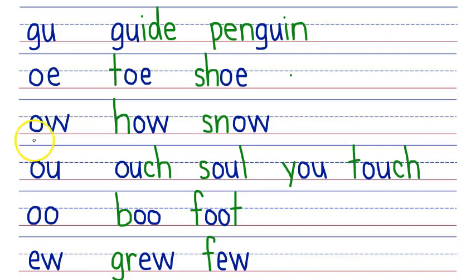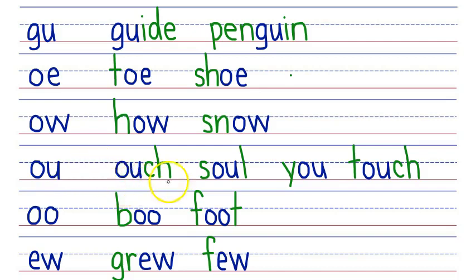You will learn about the OW phonogram that makes two sounds: OW and O. OW says OW as in 'how,' and OW says O as in 'snow.' You will learn about the OU phonogram that makes four sounds: OW, O, OO, and UH. OU says OW as in 'ouch,' O as in 'soul,' OO as in 'you,' and UH as in 'touch.'